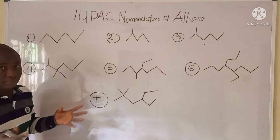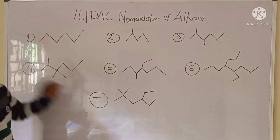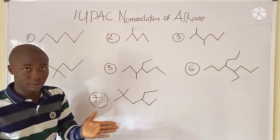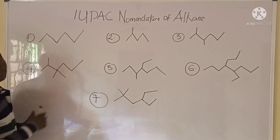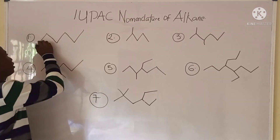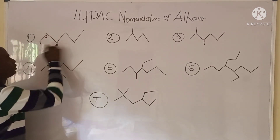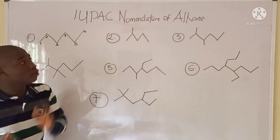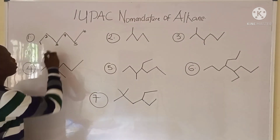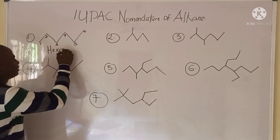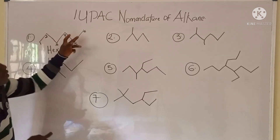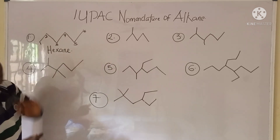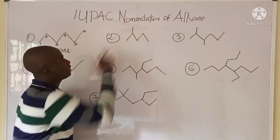Let's start with the first example. This compound is an alkane, so it will have just single bonds. This first compound contains six carbons: one, two, three, four, five, and six. A six-carbon alkane is called hexane. So the name of this compound is hexane — all single bonded.